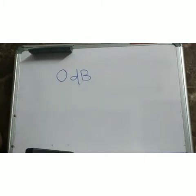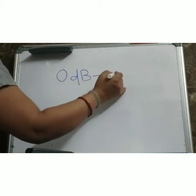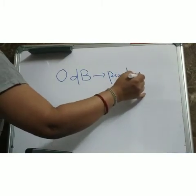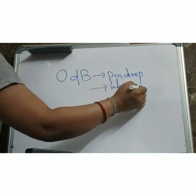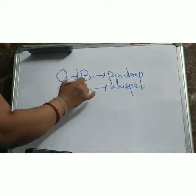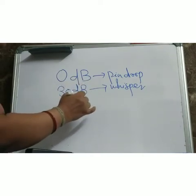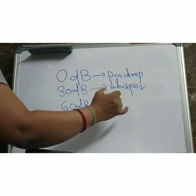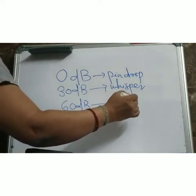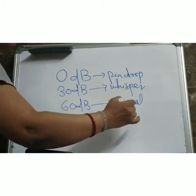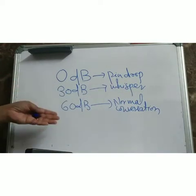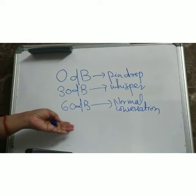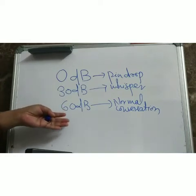When you are whispering with your friend, that whisper sound is around 30 dB. Normal conversation is around 60 dB. These values may vary slightly from book to book.